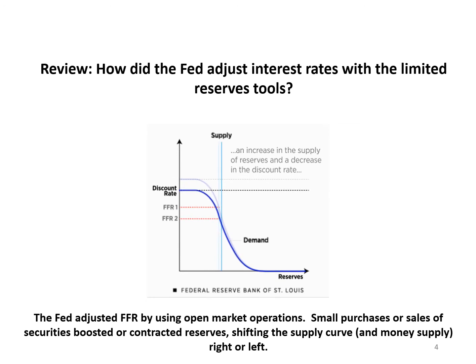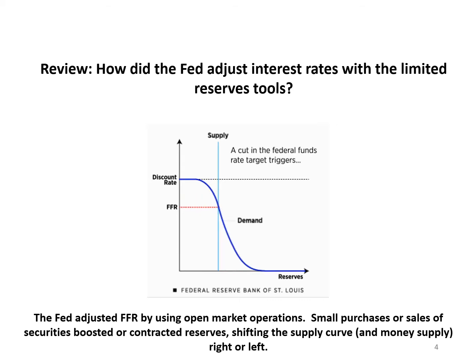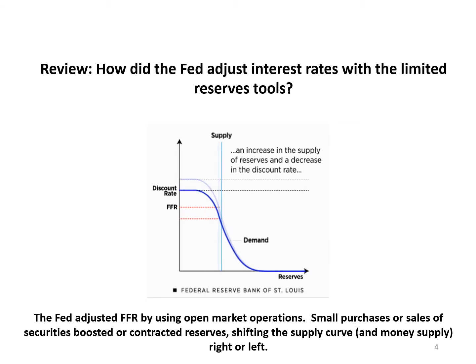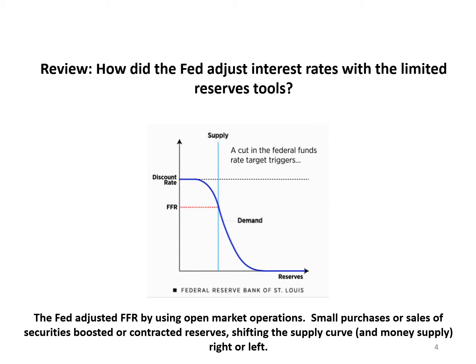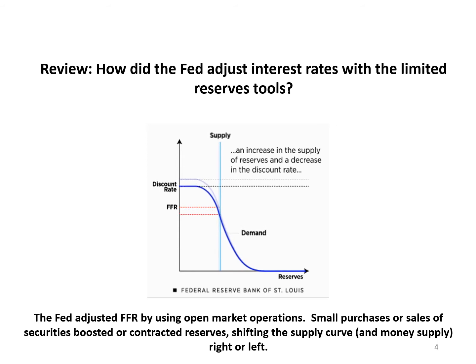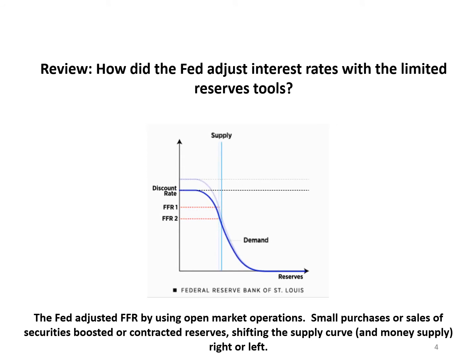Reserve requirements created a steady demand for reserves and kept the demand curve downward sloping. It eventually flattened out because at some point, banks don't need any more reserves for payments or additional cushion. Because banks shouldn't be willing to pay a higher rate than the discount rate for funds, the discount rate acted as a ceiling for the federal funds rate, and on the graph the demand curve is capped by the discount rate.